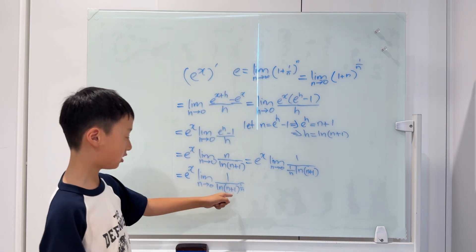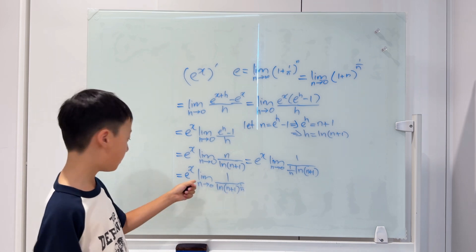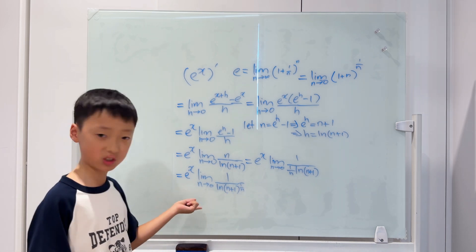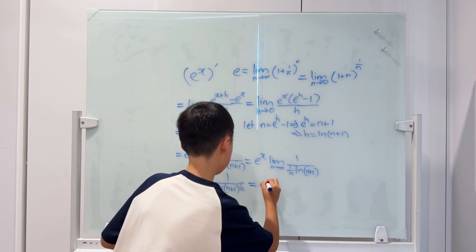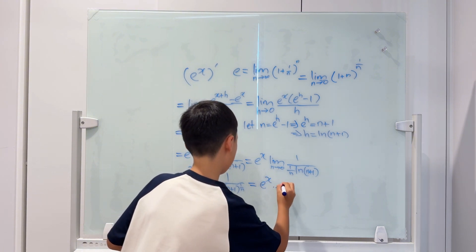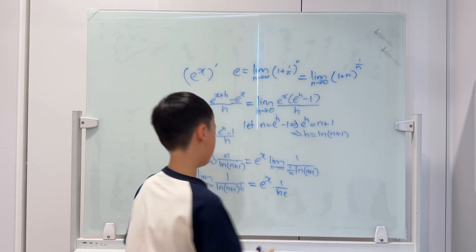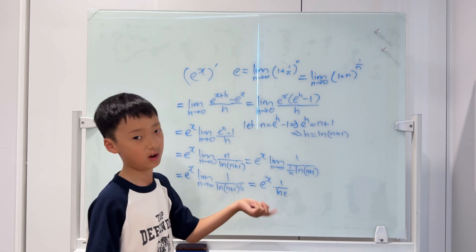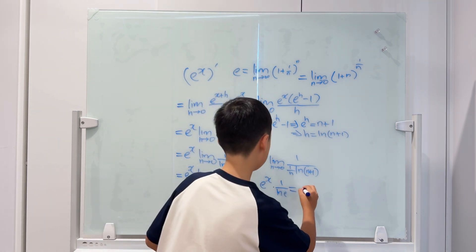We can just change this to e, but then there will be no more limit, because we just solved it. Then it will just become e to the power of x times 1 over ln e. Ln e is 1. 1 over 1 is 1. So, it's just e to the power of x.